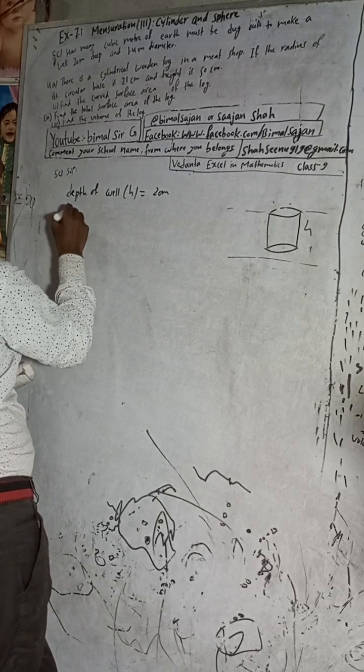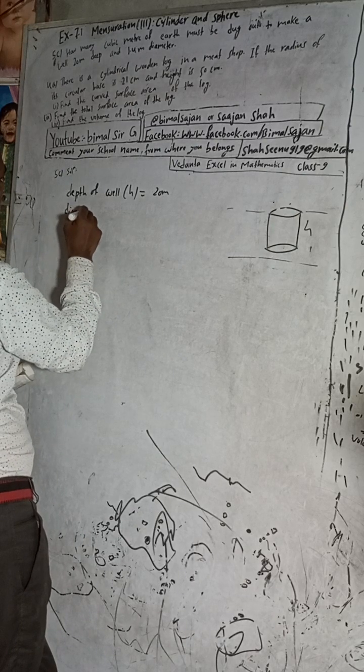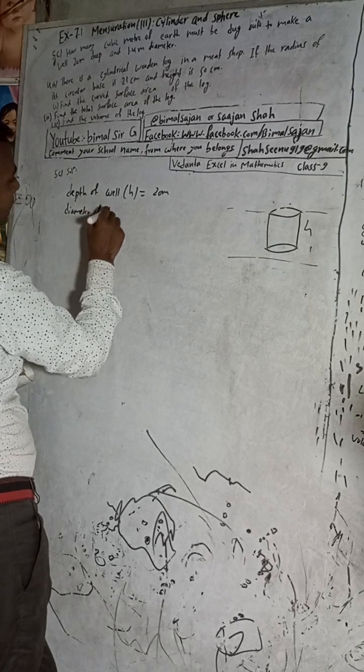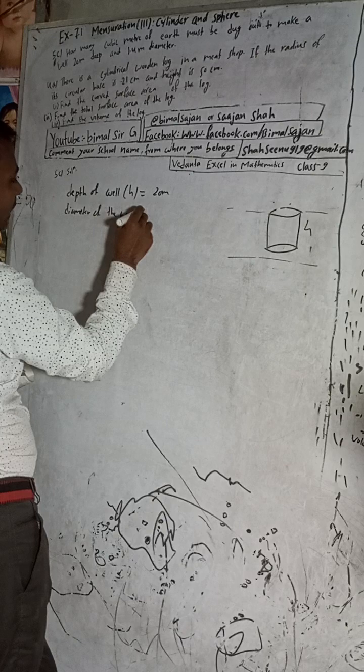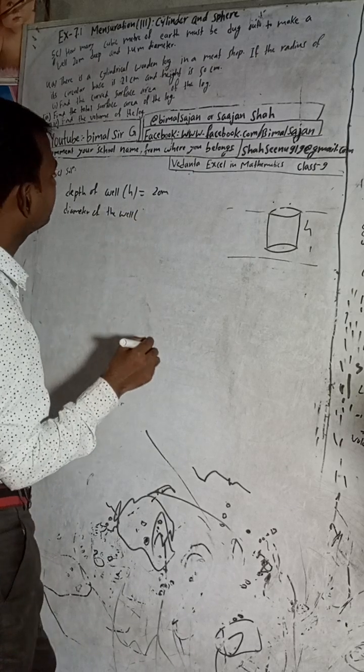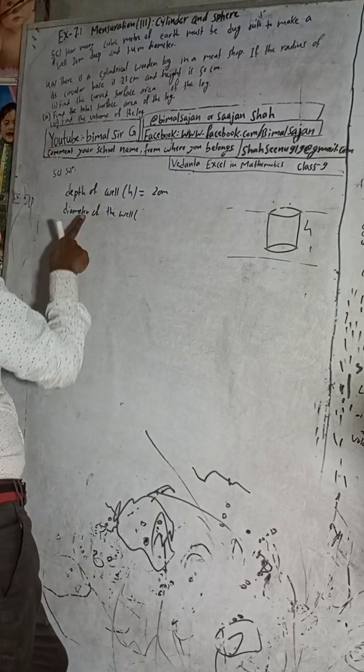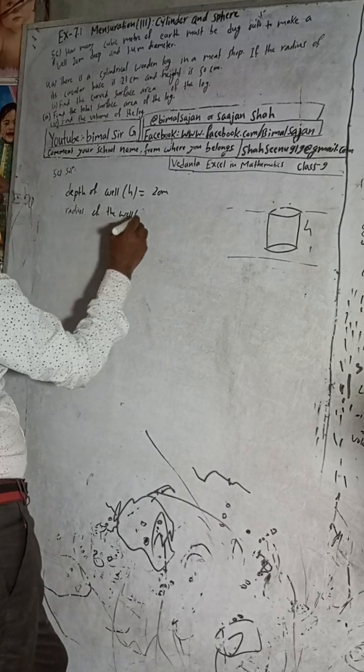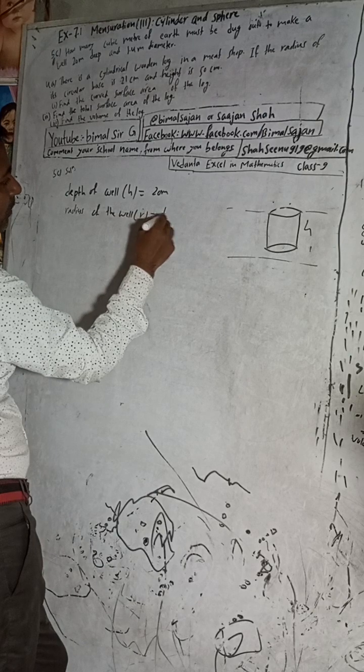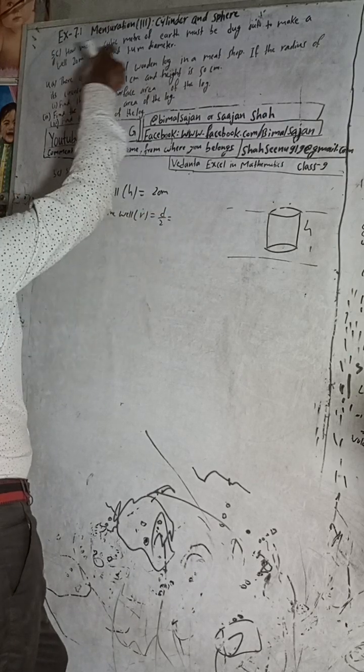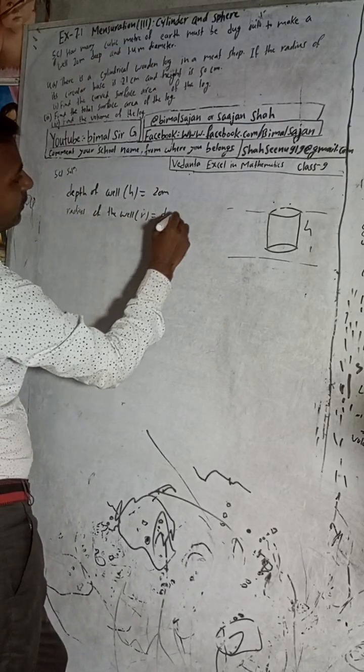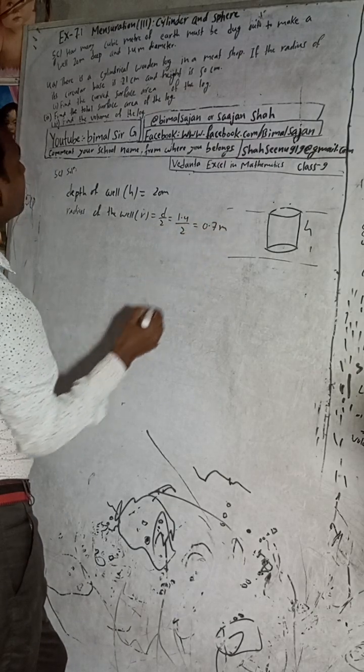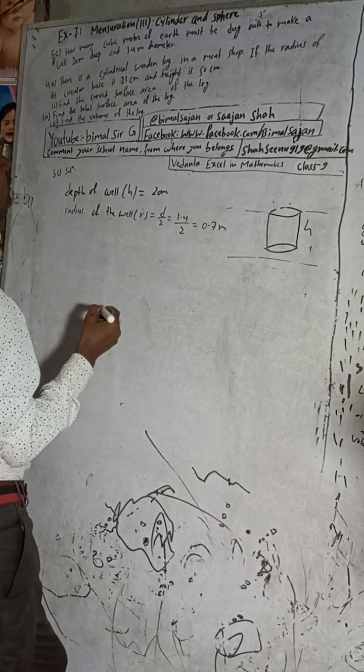And diameter of the well - how much diameter? Diameter is given here 1.4, divided by 2, that means 0.7 meters.